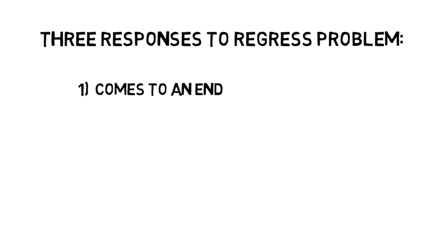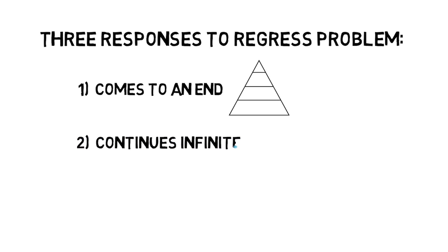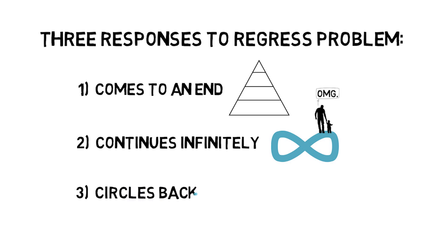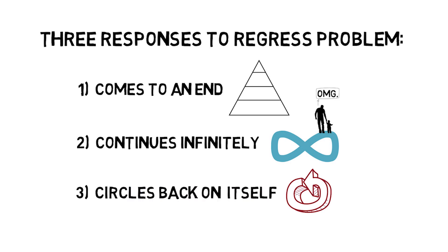One: this chain of reasons comes to an end, so there's an end point. Two: the chain of reasons continues infinitely, so for any reason you give, there's another reason for that reason. Or three: this chain of reasons circles back on itself. For instance, you have a reason for your belief that P, which is your belief that Q. Your reason for your belief that Q is your belief that R. And your reason for your belief that R is your belief that P. In this case, your reasons go into a circle.